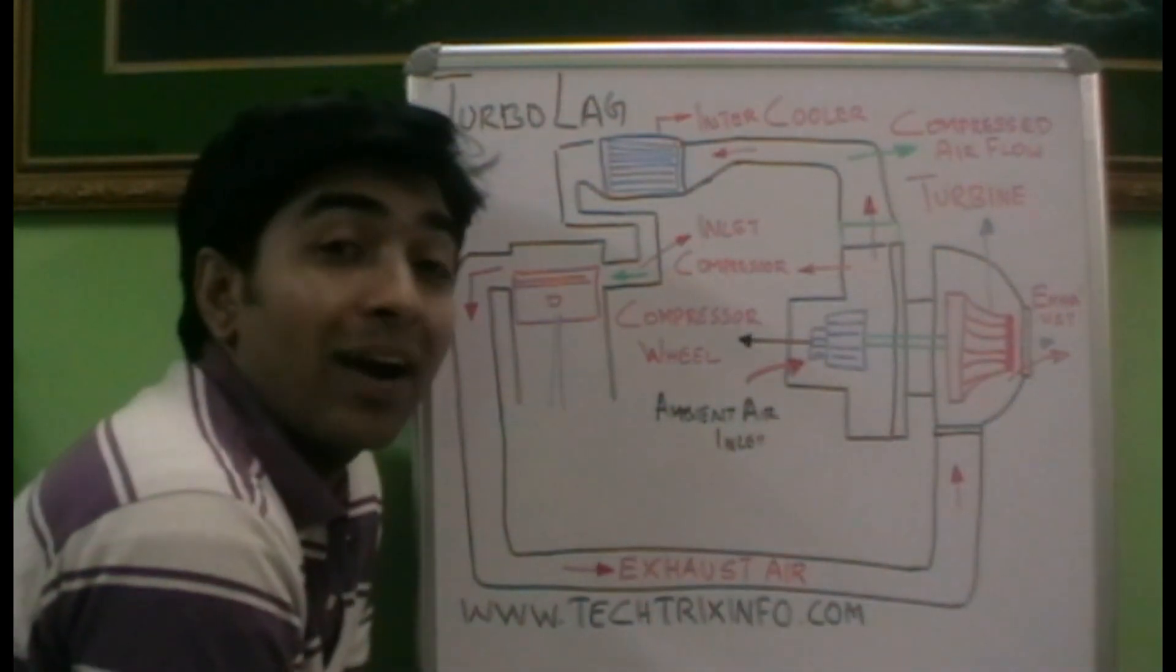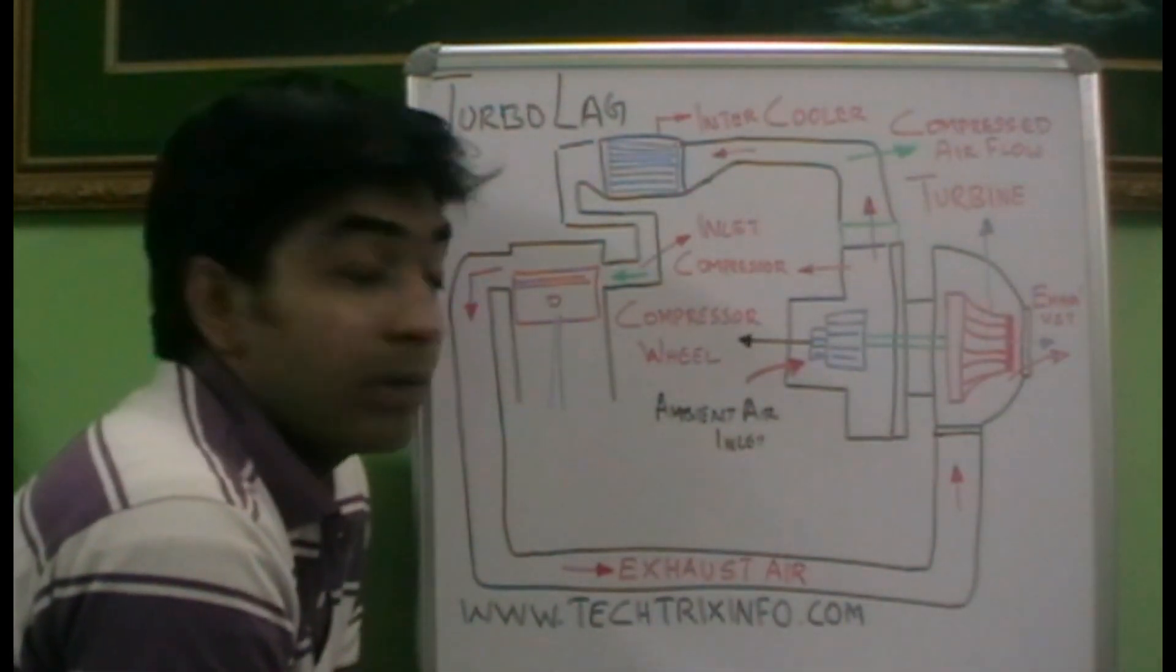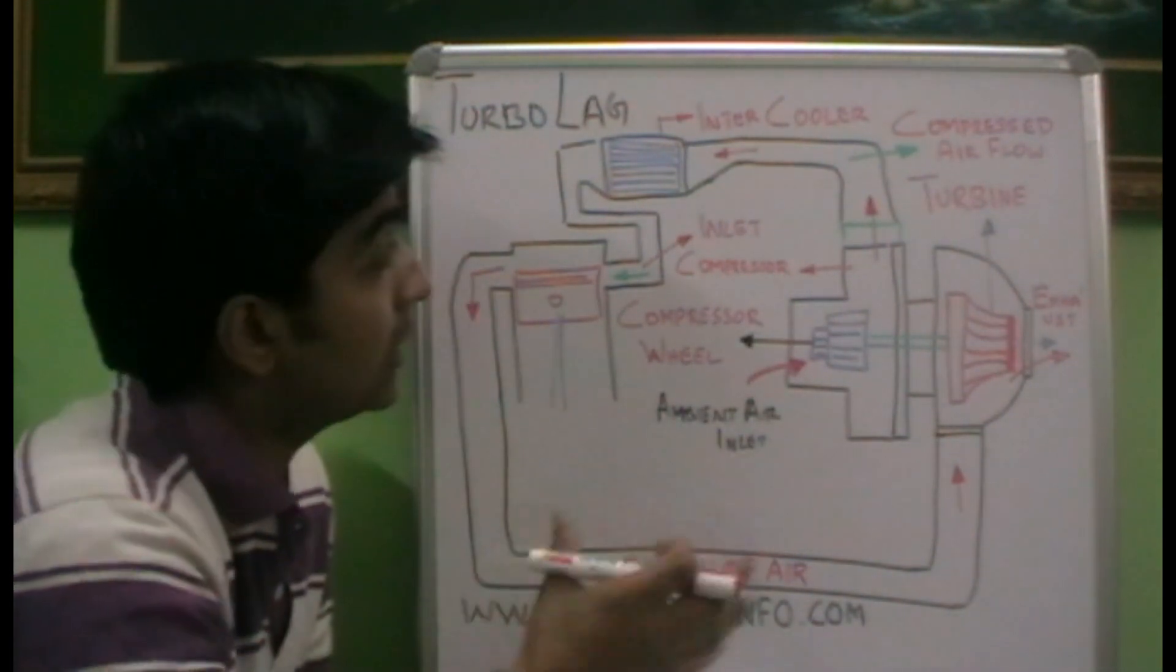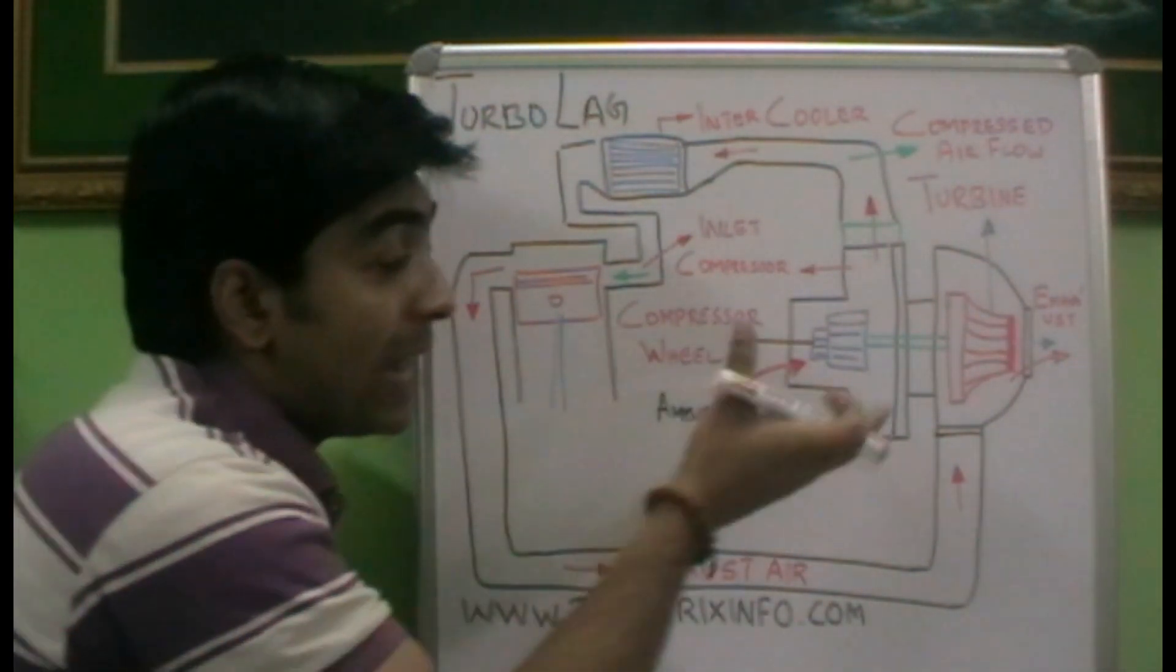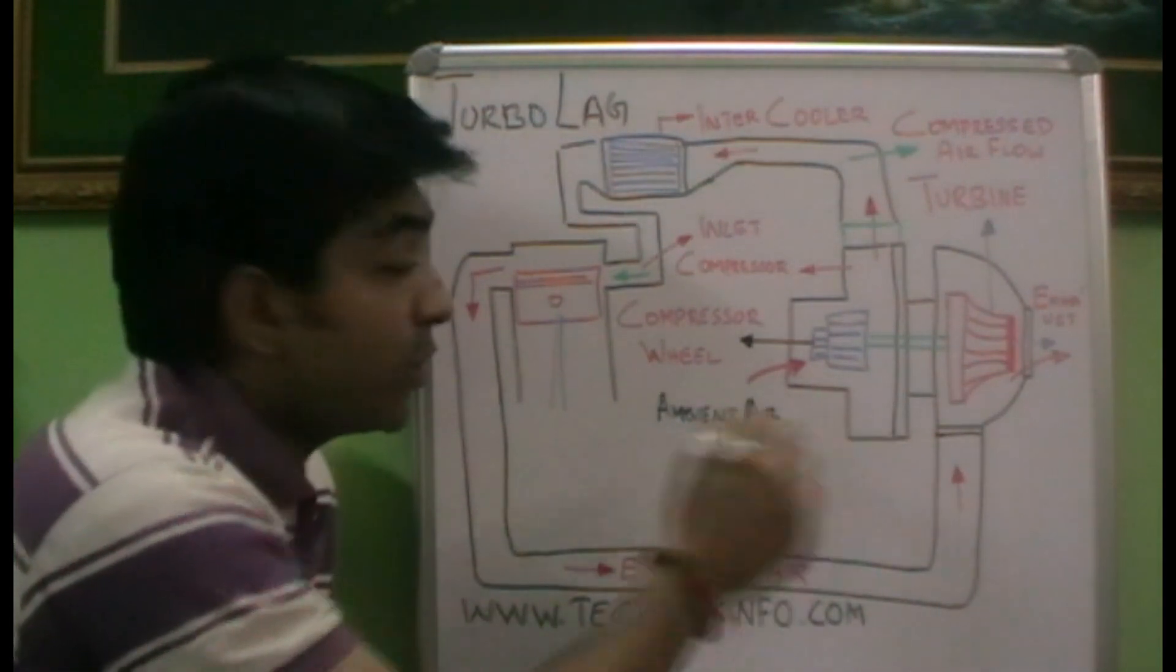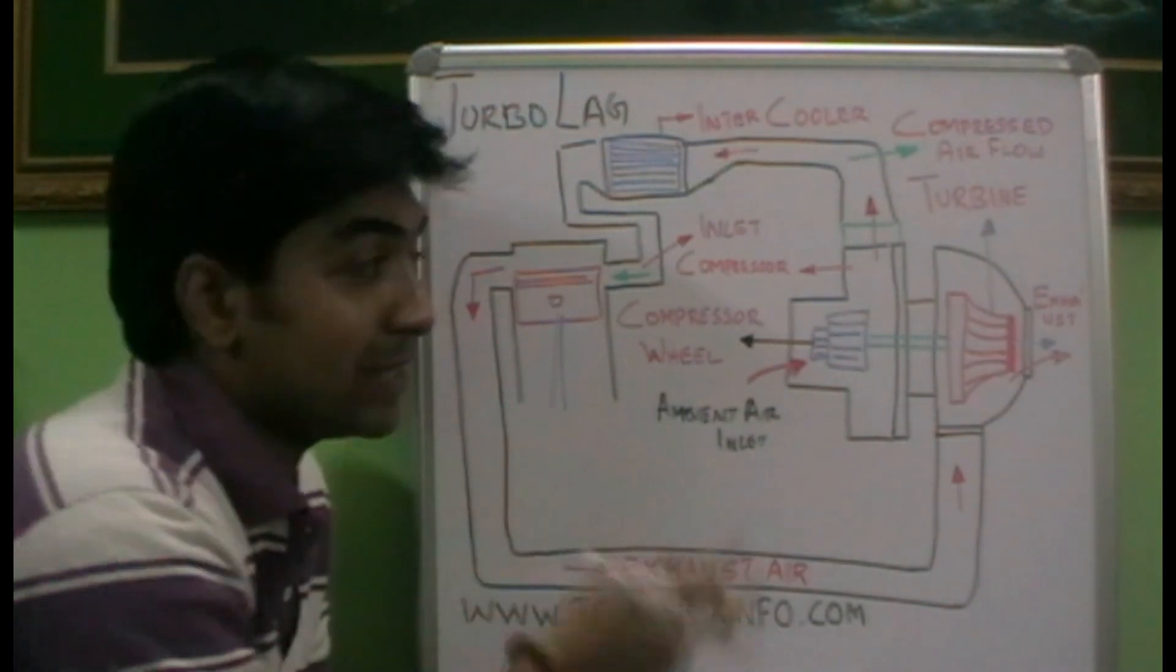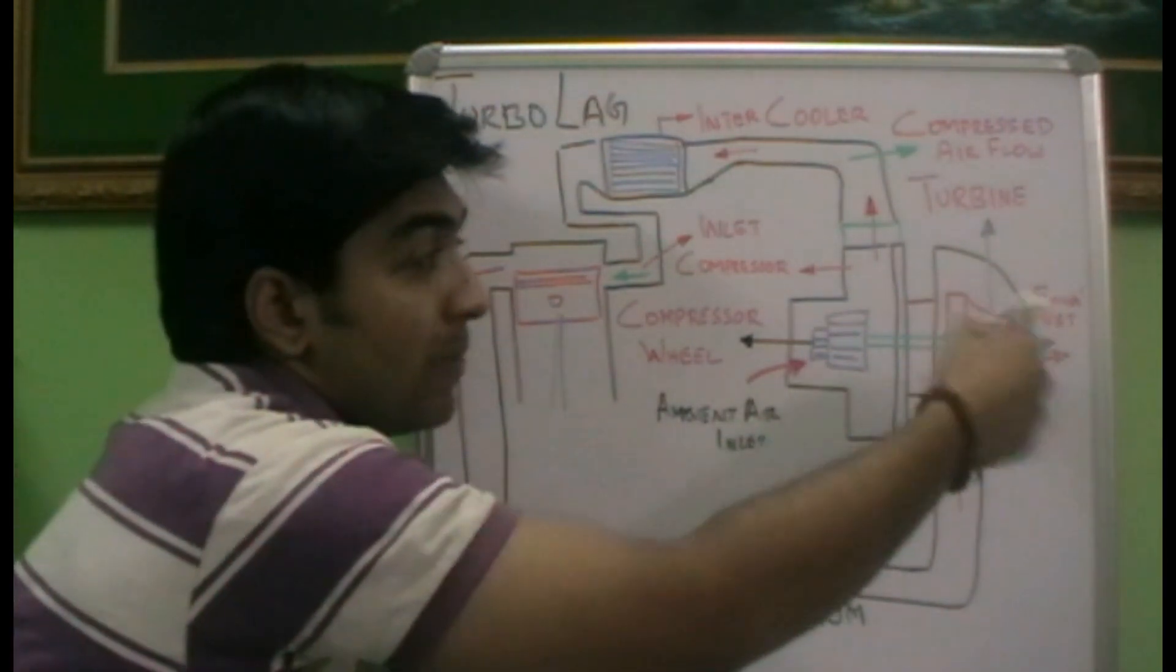The turbocharger rotates at a speed of one lakh to one lakh fifty thousand revolutions per minute (100,000 to 150,000 RPM). When we start the engine and immediately step on the gas, we will not get the required power with the help of the turbocharger.